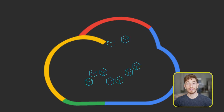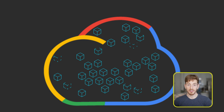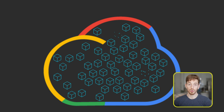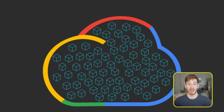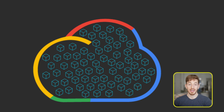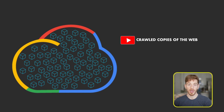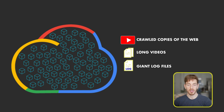The Google File System is a scalable distributed file system. GFS is the backbone that allowed Google to access large amounts of data that would not fit on a single disk, fast and in parallel. Examples are crawled copies of the web, long videos, and giant log files.